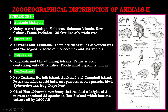Number three is the Polynesian sub-region, which includes Polynesia and adjoining islands, containing only 53 families, but the tooth-billed pigeon is very unique here. Number four is the New Zealand sub-region, which includes New Zealand, Norfolk Island, Auckland, and Campbell Islands. Fauna includes murid bats, owl parrots, nestling parrot, kiwi, Sphenodon, frogs (Leiopelma), and the giant moa Dinornis maximus, which reached a height of three meters. It contained 22 species in New Zealand, all of which became extinct by 1600 A.D.